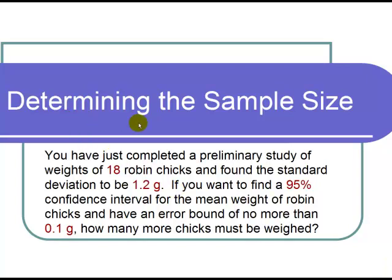This is a video on determining the sample size. The question states, you have just completed a preliminary study of weights of 18 Robin Chicks and found the standard deviation to be 1.2 grams.